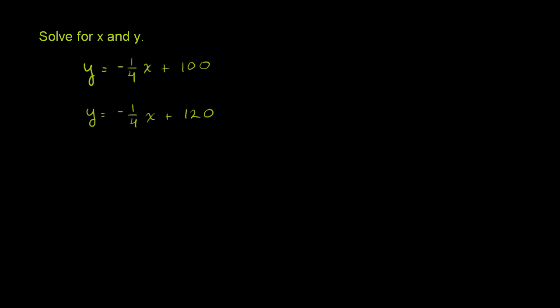Or another way to think about it is, if y is equal to this whole thing right over here, that's what that first equation is telling us. And if we have to find an x and a y that satisfy both of these equations, if y is equal to that, why can't I just substitute that right here for y?